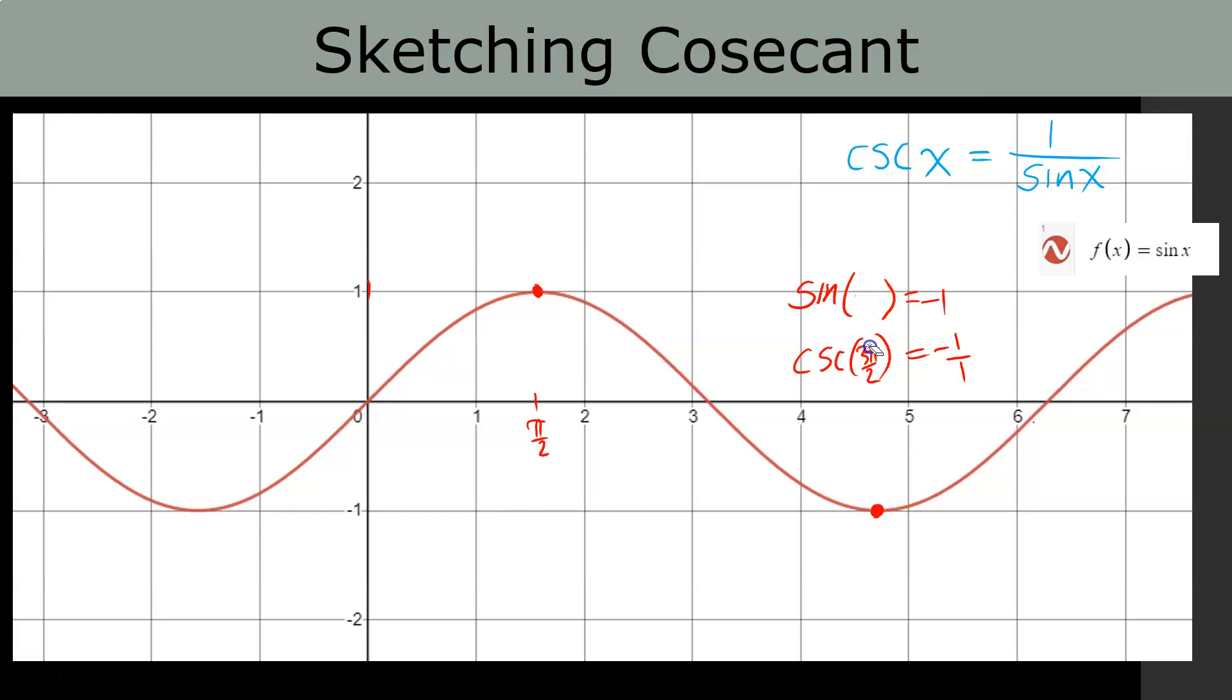Maybe we'll do something slightly more interesting. Sine of π/6 is 1/2, which means cosecant of π/6 is 2/1. So that's going to be right about there. And cosine of 5π/6 is 1/2, so cosecant of 5π/6 would also be 2. Let's put in that -1 and all of that sort of stuff.